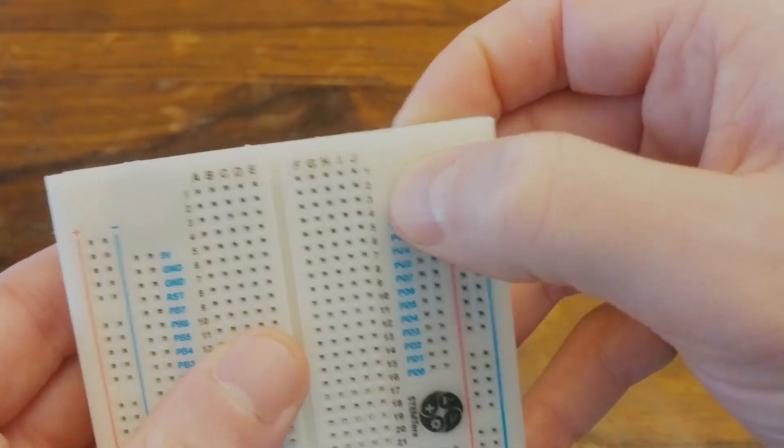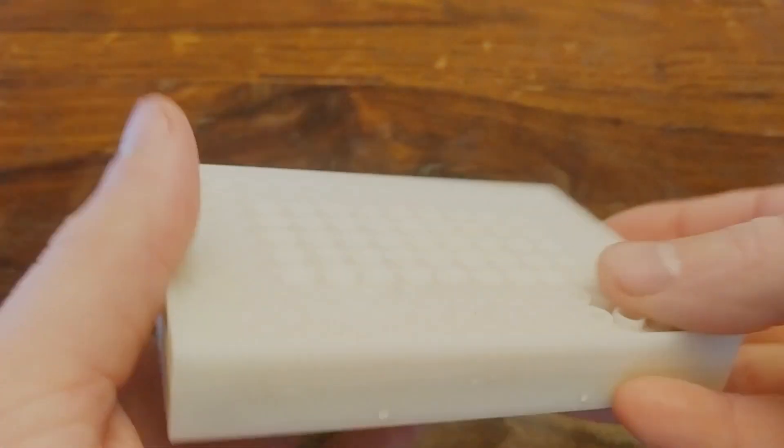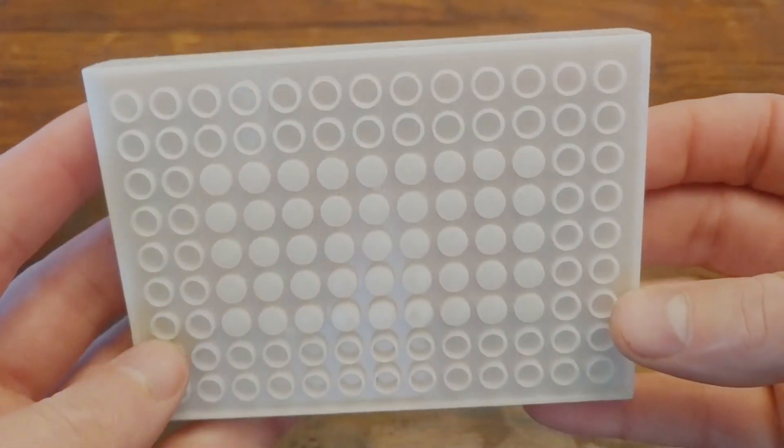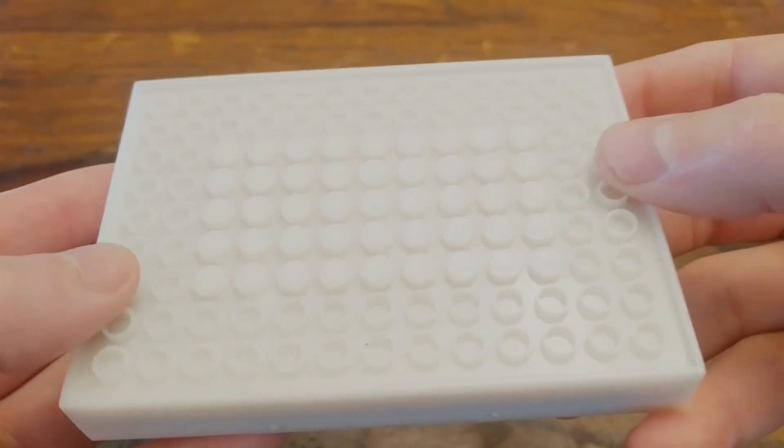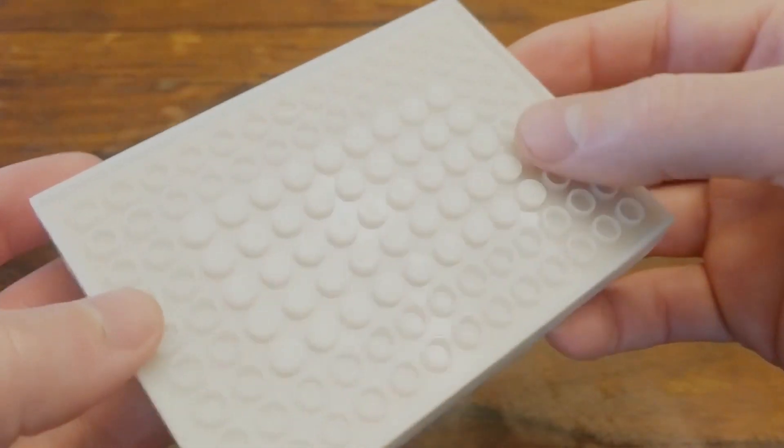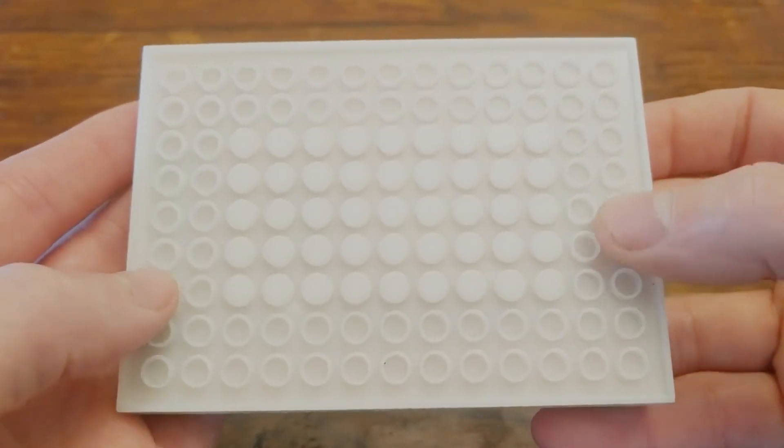And if you flip it over, the back is actually Lego compatible. So you could build a base of some kind, or a robot for instance, and have it so that the breadboard just snaps right onto it. And yeah, that's pretty much the gist of it.